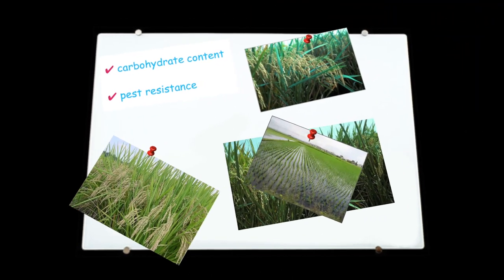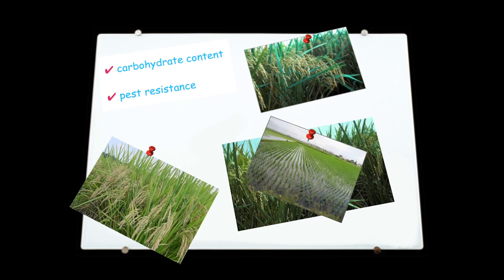A recent discovery in the Frommer lab, the identification of transporters that move sugar throughout the plant, has been used to develop rice plants that meet two of the major goals in agriculture by increasing the carbohydrate content and pest resistance of crops.